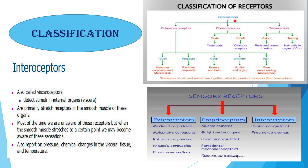The classification of exoreceptors includes: Cutaneous Receptors, Chemoreceptors, and Teloreceptors. Cutaneous receptors are divided into touch, pressure, cold, warmth, and pain. Chemoreceptors are divided into taste and smell — taste includes taste buds and smell includes olfactory receptors. Teloreceptors are divided into vision and hearing — vision includes rods and cones in the retina, and hearing includes hair cells in the organ of Corti in the ear.